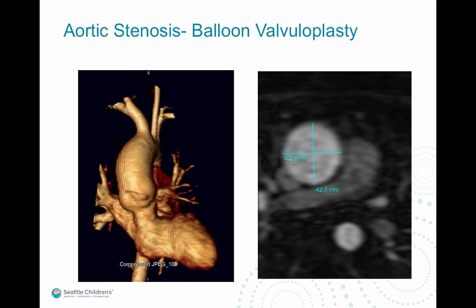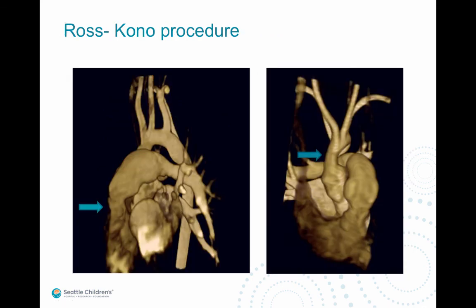Here's an 18-year-old with history of aortic stenosis status post balloon valvuloplasty with residual left ventricular outflow tract obstruction and aneurysmal dilatation of the ascending aorta measuring about 42 millimeters at the level of the right branch pulmonary artery. Another teenage patient had a history of Ross procedure, re-stenosed, and finally had a Ross-Konno procedure, with some narrowing of the right ventricular outflow tract and aneurysmal dilatation of the main pulmonary artery, as well as stenosis of the distal ascending aorta.